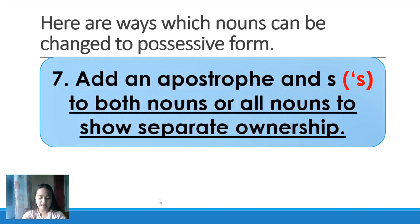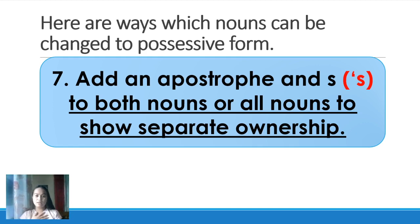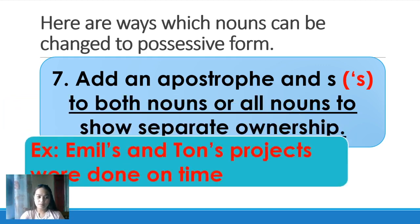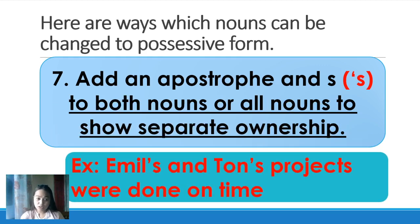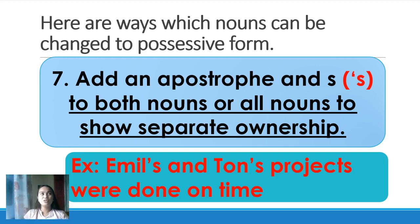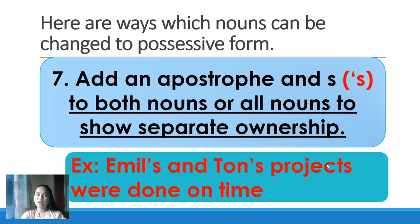Number seven: add an apostrophe and S to both nouns or all nouns to show separate ownership. Example: 'AJ's and Ivan's projects were done on time.' AJ has his own project and Ivan has his own project — they are separate. So both names get apostrophe S to show separate ownership.